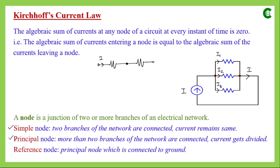The second concept is the principal node — a node in an electrical network where more than two branches are connected, and where the current gets divided. Looking at the node where the main current I splits into three parts, we have four branches meeting there, so it is a principal node. The bottom node where those three currents rejoin is also a principal node. Among all principal nodes, the one connected to ground is called the reference node.